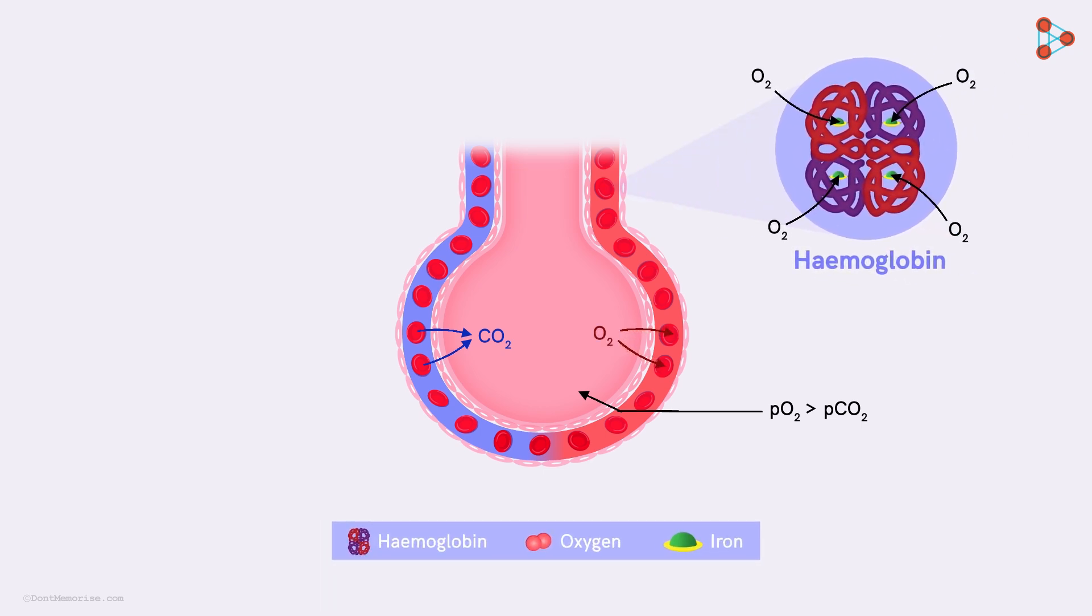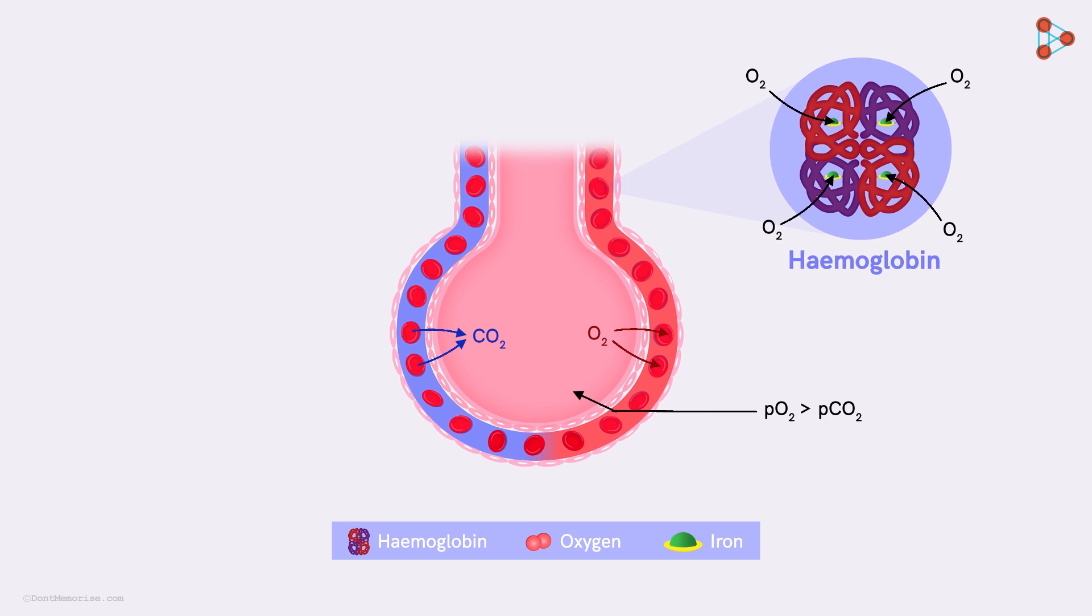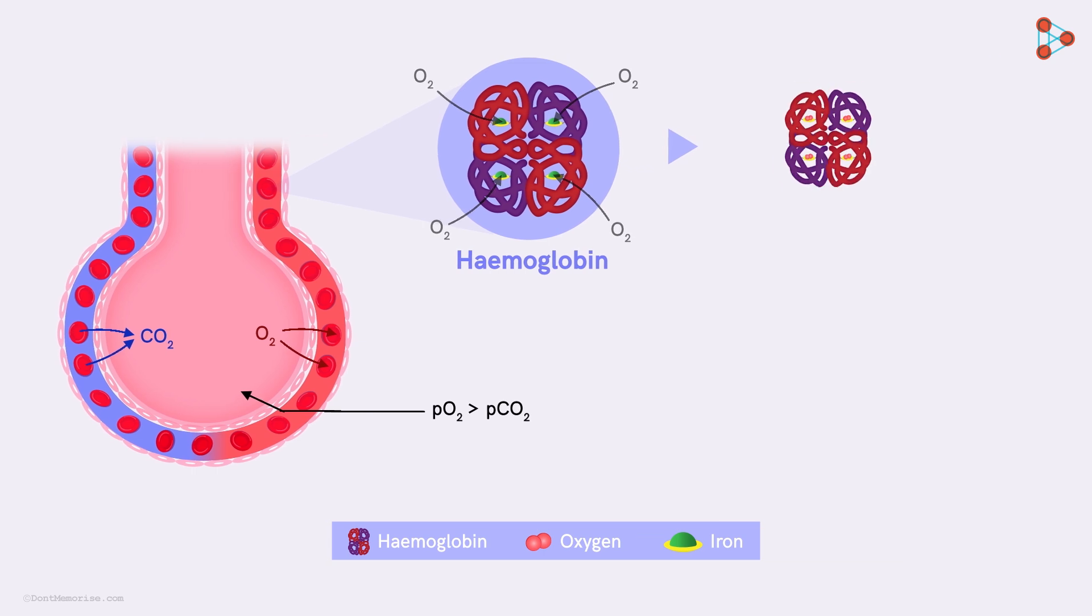Each oxygen binds to the ion component, that is the heme group, of the hemoglobin molecule. Thus, a single hemoglobin can usually carry 4 oxygen molecules. The binding of oxygen to hemoglobin helps in the formation of a complex called the oxyhemoglobin.